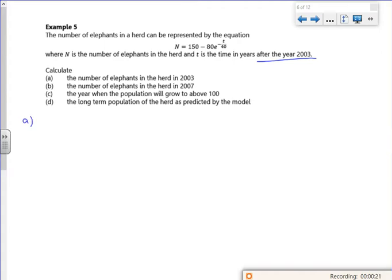So n, calculate the number of elephants in the herd at 2003. So 2003, that's t is 0. So n is 150 minus 80 e to the power of 0. e to the power of 0 is 1, I've got 150 minus 80, I've got 70 elephants.